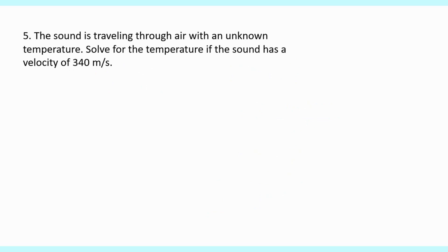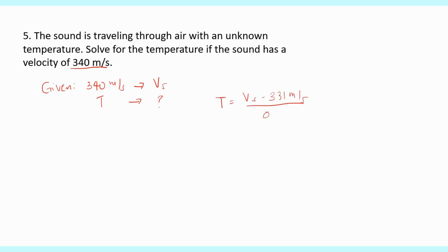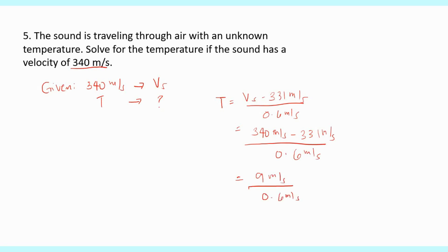We are down to our last problem: the sound is traveling through air with an unknown temperature. Solve for the temperature if the sound has a velocity of 340 meters per second. Given: Vs = 340 m/s. Using the derived formula: T = (Vs - 331 m/s) / 0.6 m/s. So T = (340 - 331) / 0.6 = 9 / 0.6 = 15 degrees Celsius.